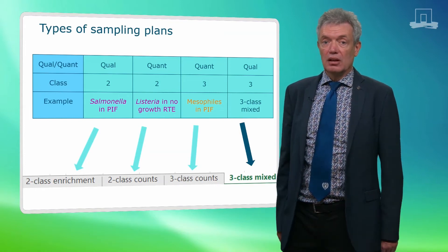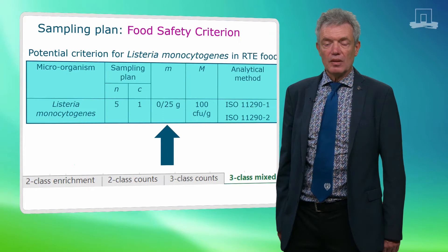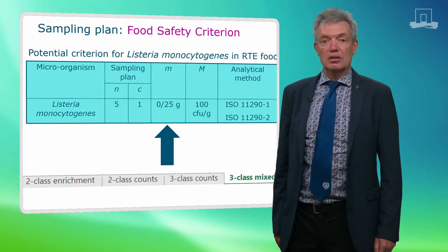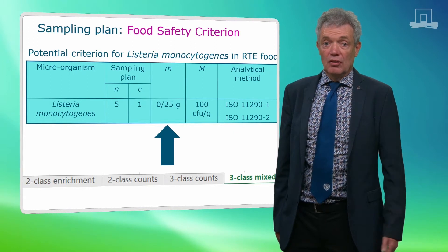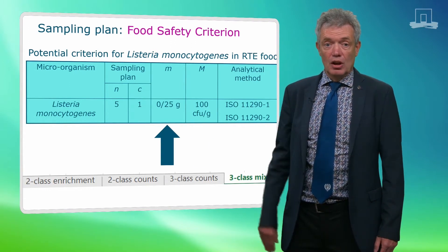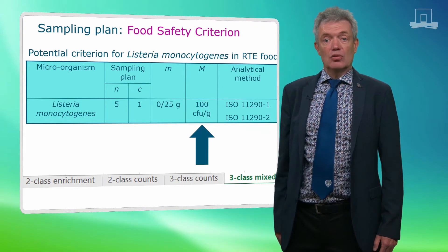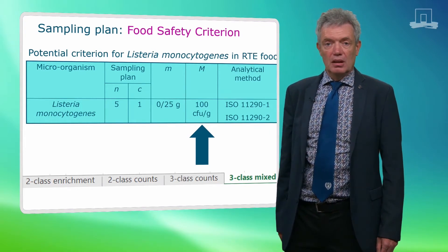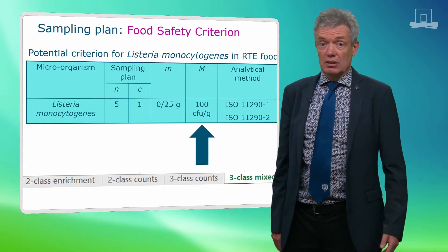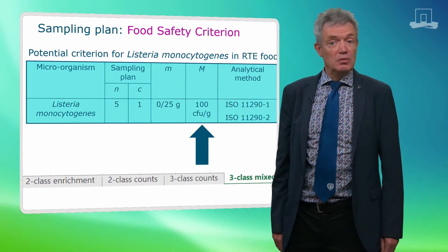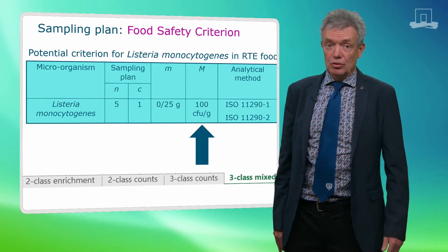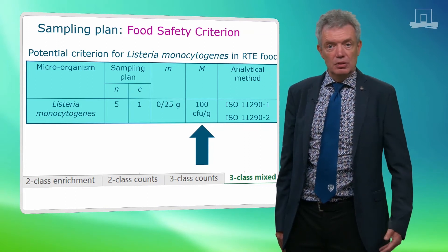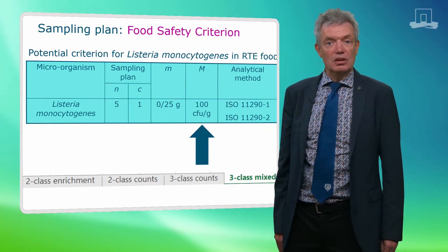Here the three-class mixed tab needs to be chosen. In a three-class mixed plan the lower limit is a presence absence test, for example absence in 25 grams. The upper limit is a quantitative test, for example 100 CFU per gram. This plan detects a high prevalence, since then more than one of the enrichments will be positive. It also can detect a low-prevalent high concentration by testing if an occasional positive sample is larger than 100 CFU per gram.